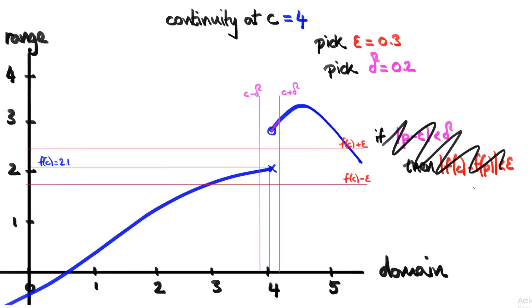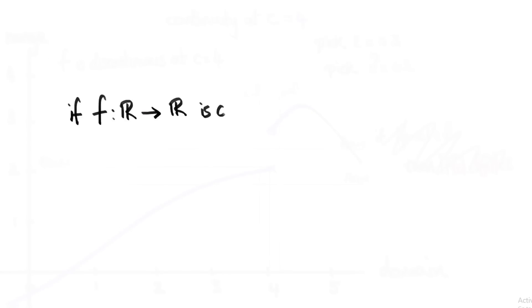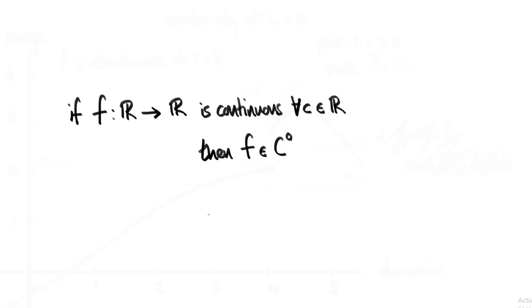So we can say that f is discontinuous at c equals 4. Our function is continuous at the point 2 but discontinuous at the point 4. If we have a function that's continuous at every point — that is, f from ℝ to ℝ is continuous for all points c in the real numbers — then we say that f is a member of the set of continuous functions. We denote the set of continuous functions by a capital C with a superscript zero, and we'll see what that superscript zero means in a future video.